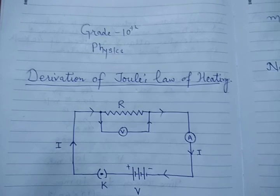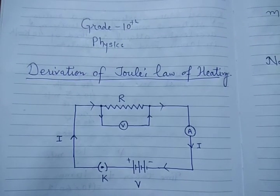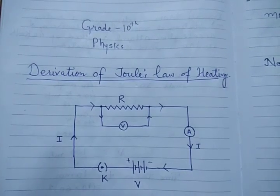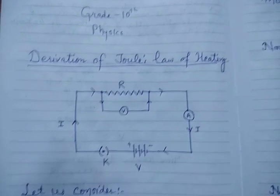So in Joule's law of heating, as the name suggests, electrical energy gets converted to heat energy and light energy. Now let us see how this is happening.